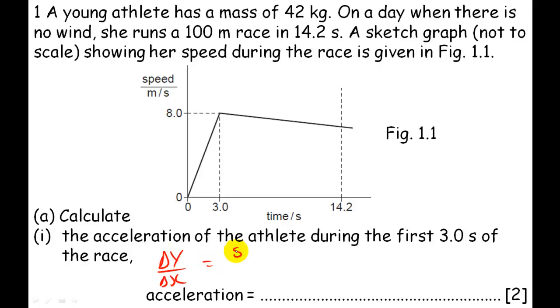So this is just going to be 8 divided by 3. Let me get my calculator. So that's 2.66, I'll just go for 2.67 meters per second squared. The units can also be meters second to the minus 2. They both mean exactly the same thing.